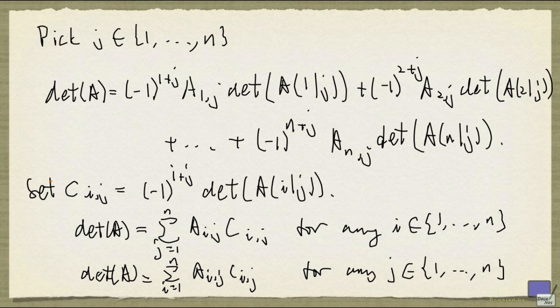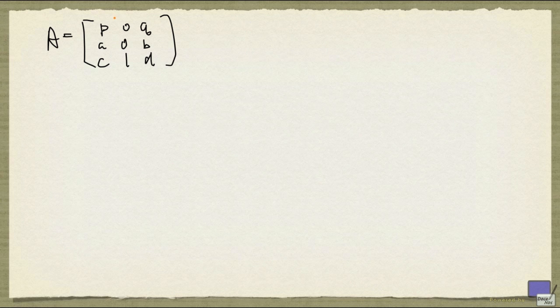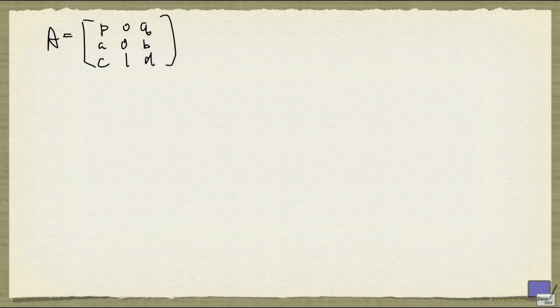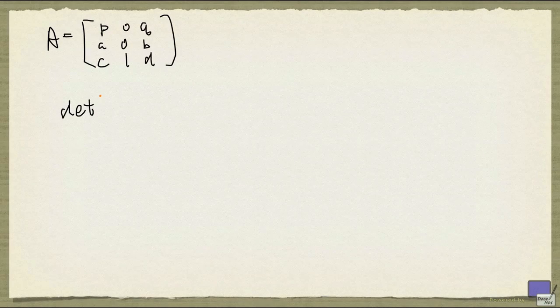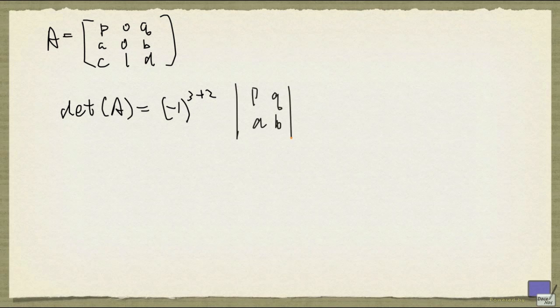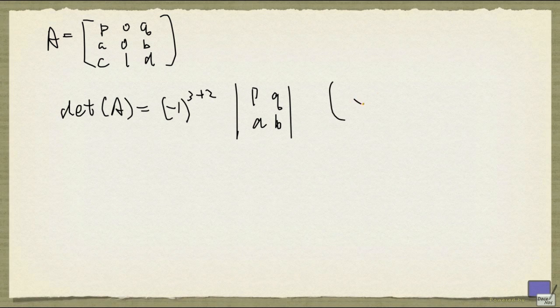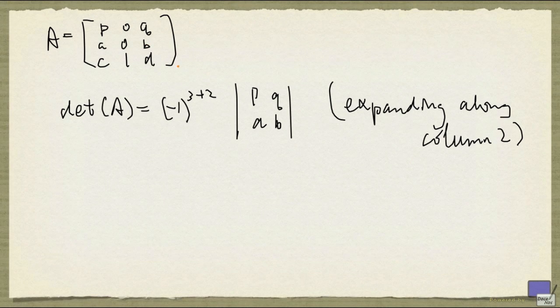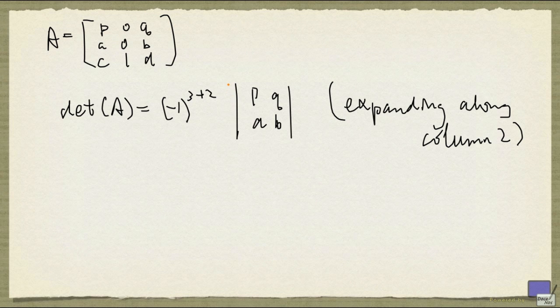Now the reason why one might want to use the cofactor expansion is, when the matrix has many zeros, things can really simplify. So for example, suppose my matrix looks like this. The entries are p, 0, q in the first row, a, 0, b in the second row, and c, 1, d in the third row. If I use the cofactor formula that expands along column 2, then the determinant of A is simply given by this. Because all the other terms will be multiplied by these two zeros, what's left is a term corresponding to a_32. So if your matrix has lots of zeros, then you could exploit this fact, use the cofactor formula for appropriate choice of a column or row, and you can really reduce the number of computations that you have to perform.